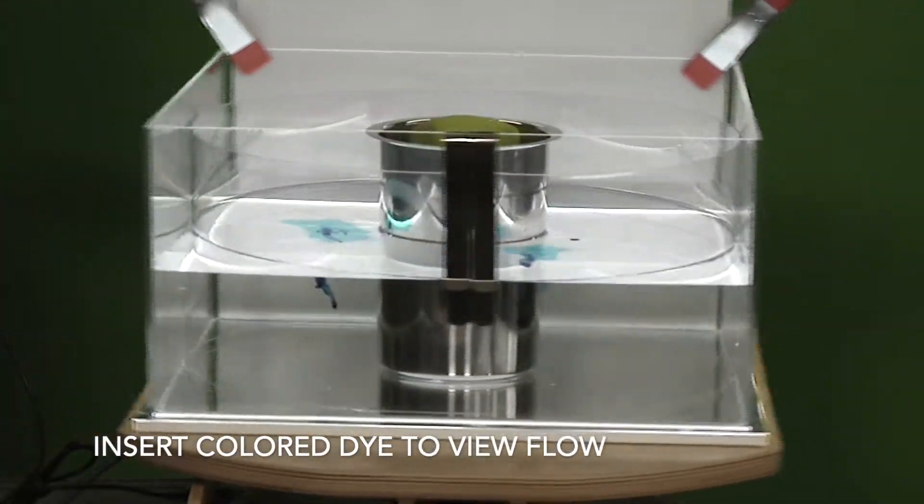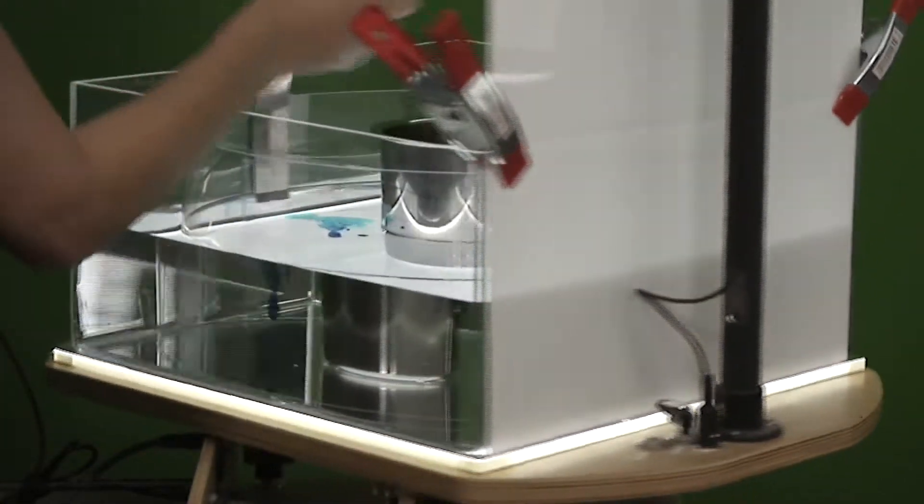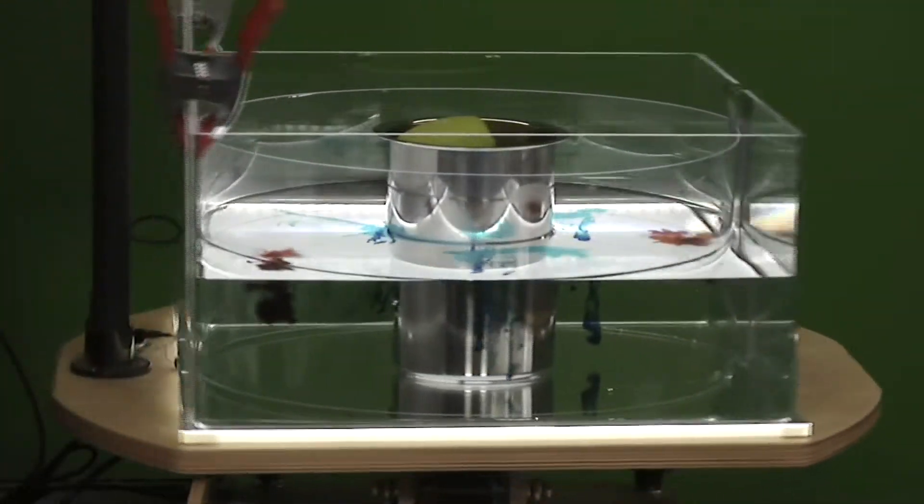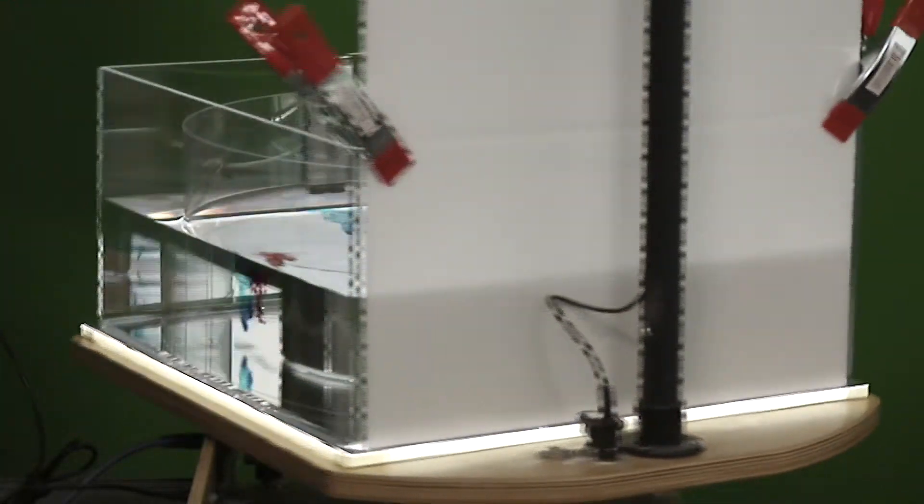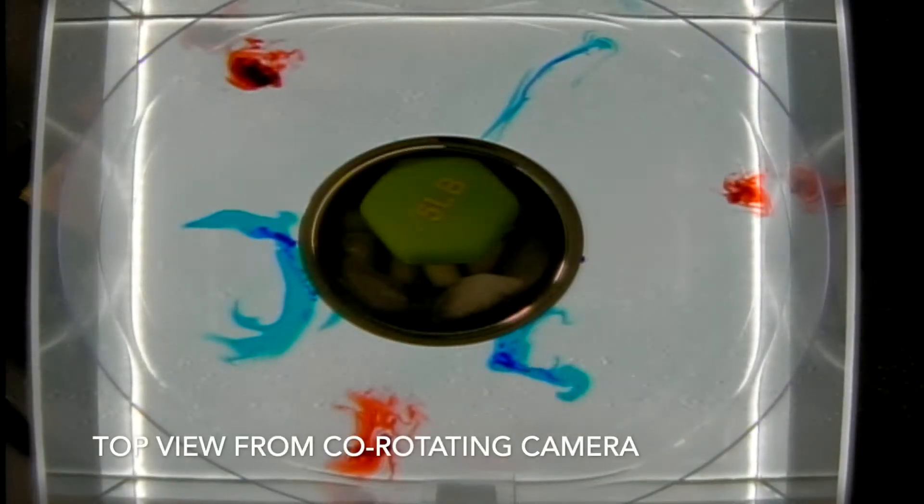In this experiment, the cold water at the center of the tank near the axis of rotation is analogous to the cold air near the pole, whereas at the edge of the tank the warmer water represents the warm air near the equator.